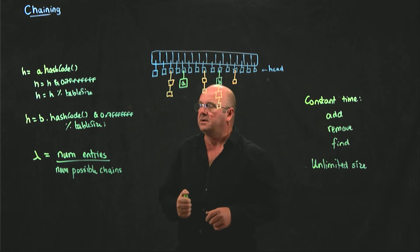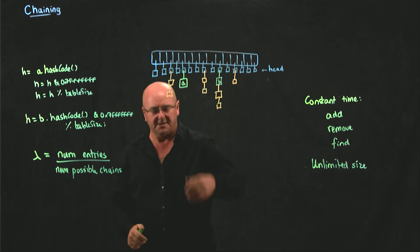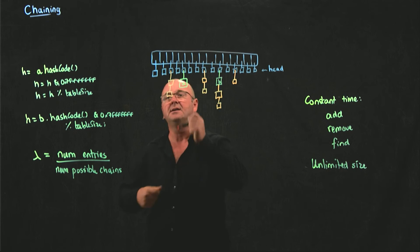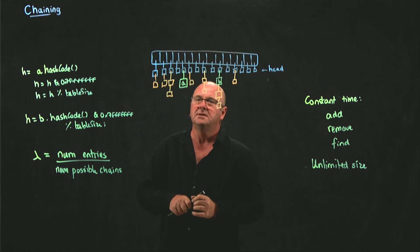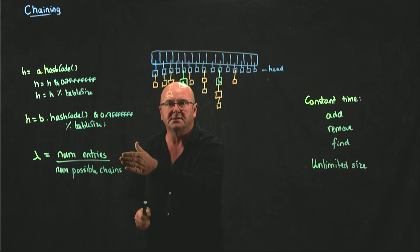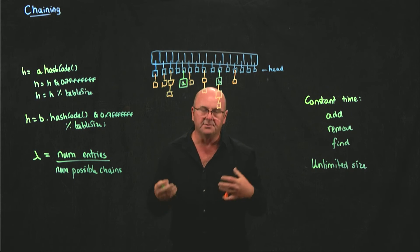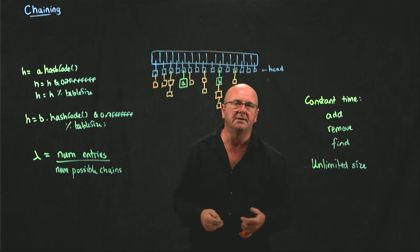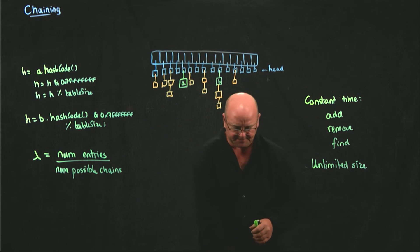And so, as our data structure starts growing, as we've shown here, as we start adding things, it's quite possible for lambda to match, to be one, to match the number of chains. Or for lambda to be larger, to be two, or three, or ten, or even higher. We can add a lot more things to our data structure than we have elements for.